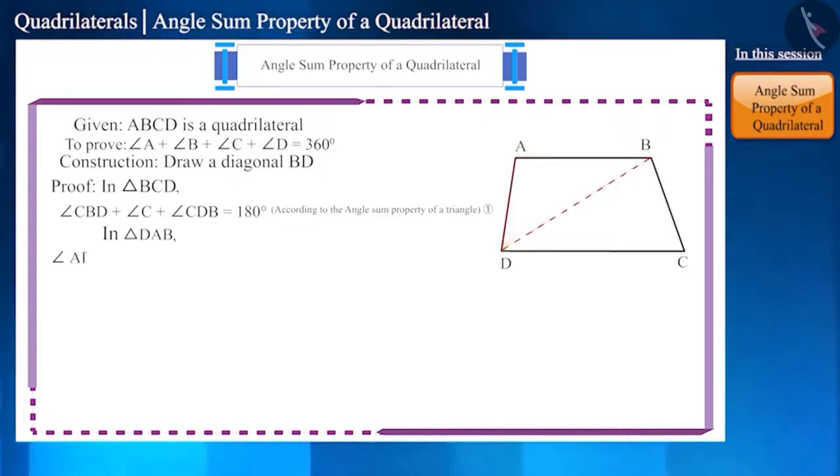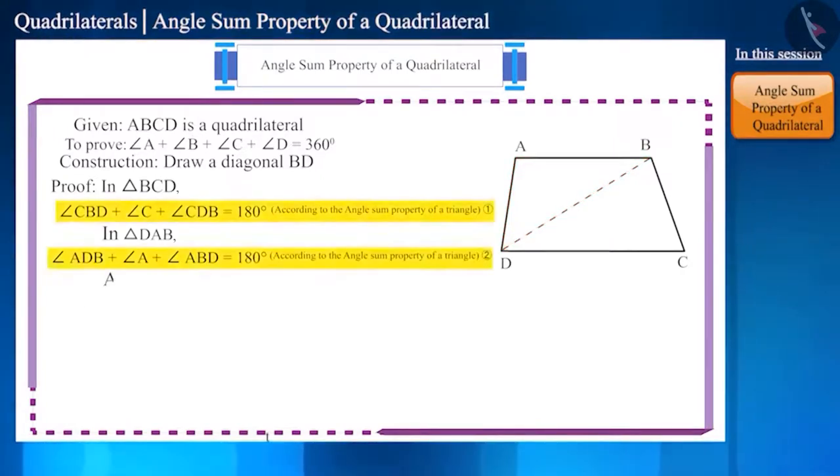Similarly, in triangle DAB, angle ADB plus angle A plus angle ABD equals 180 degrees. Adding equations 1 and 2, we get...